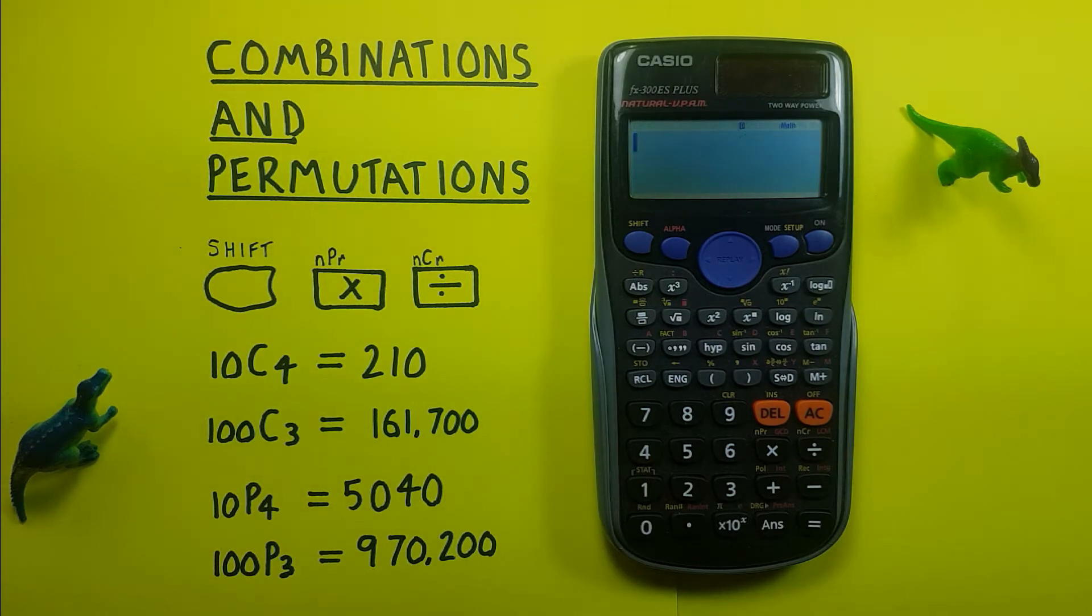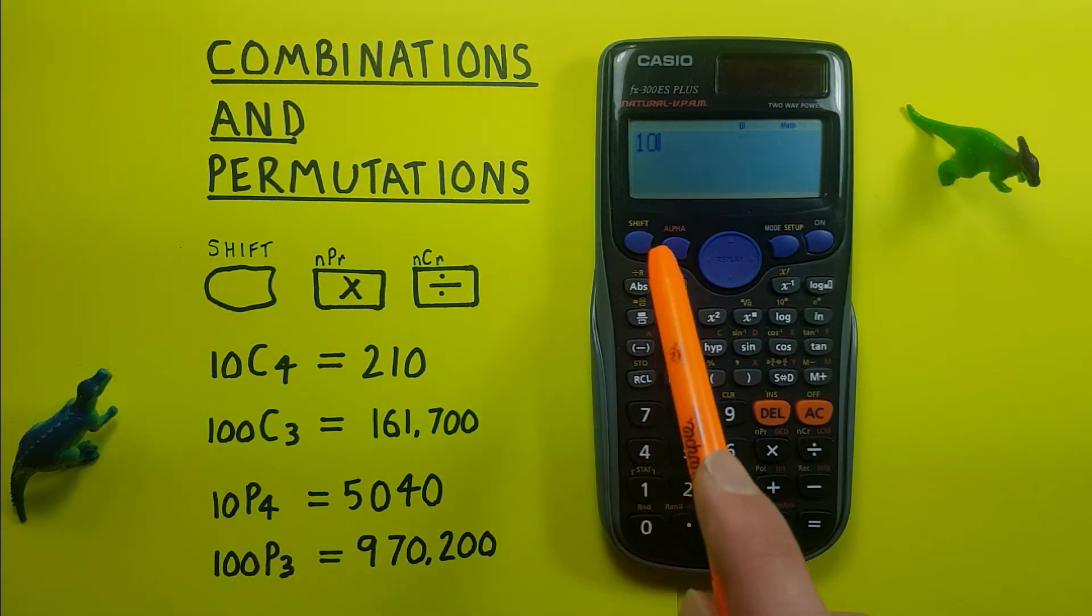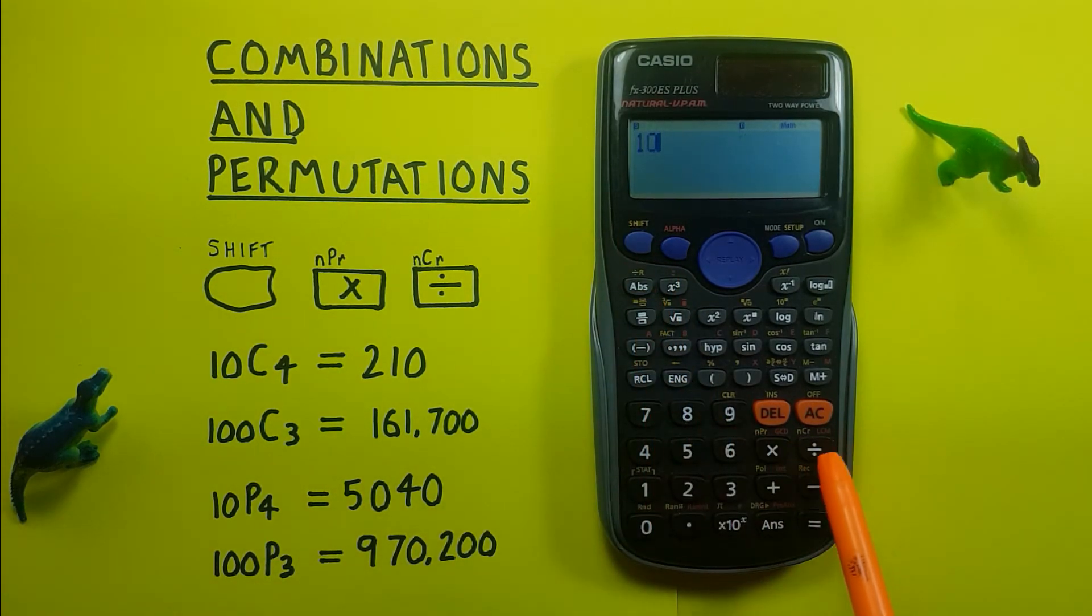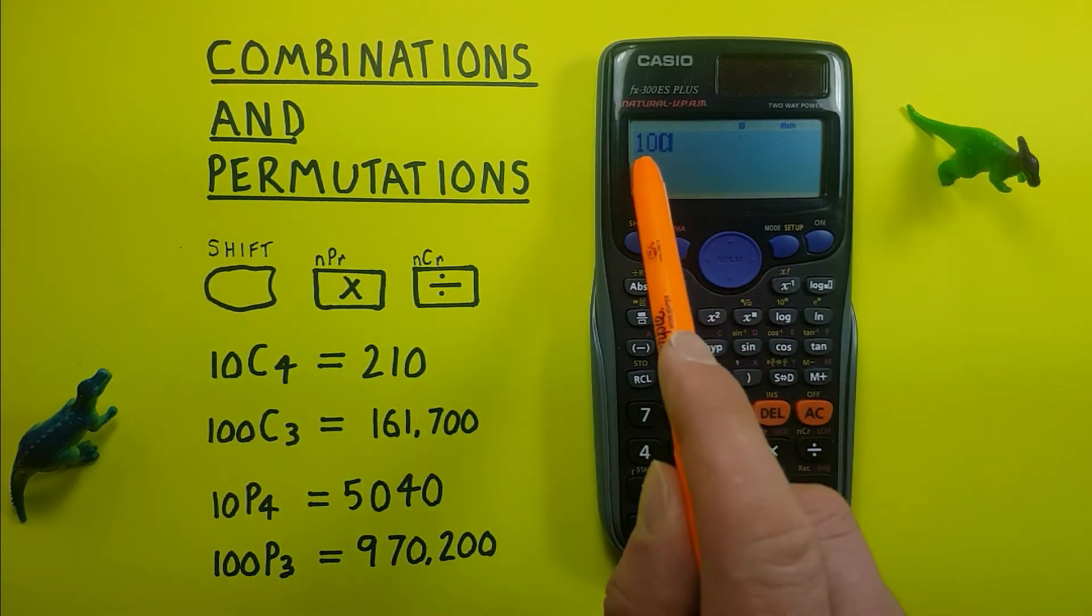For example, if we wanted to choose four objects from a set of 10, we would write it like this and solve it by entering 10 on our calculator, then pressing shift and then the division key, which has the shift function of combination. You'll see a C appear on your screen.